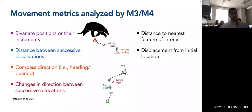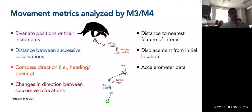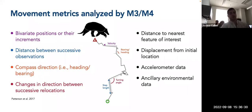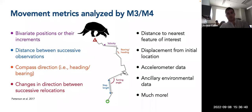Other variables that could be used include distance to a nearest feature of interest — such as a den, burrow, coastline, or other boundary. You could also include displacement from the initial location, accelerometer data such as tri-axial accelerometry, or activity counts if your tag summarizes accelerometer data that way. Any other ancillary environmental data measured by your bio-logger tag could be included as well. Essentially, the sky's the limit on what you could include.